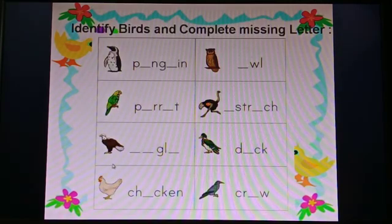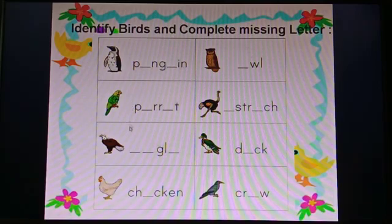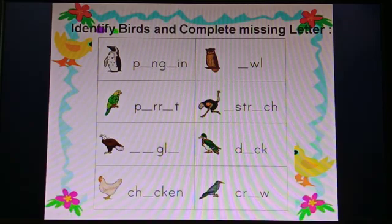Look here. Identify the birds and complete the missing letters. Here you have to complete the spelling of penguin, parrot, eagle, chicken, owl, ostrich, duck, and crow. These all are famous birds.